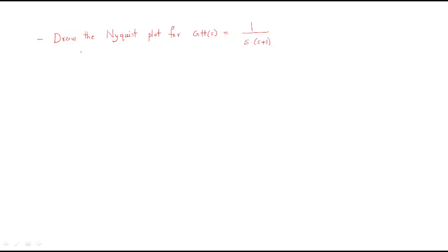Hello everyone. In this session we will discuss a problem of the Nyquist plot. The problem is: draw the Nyquist plot for the open loop transfer function G(s) = 1 / [s(s+1)].